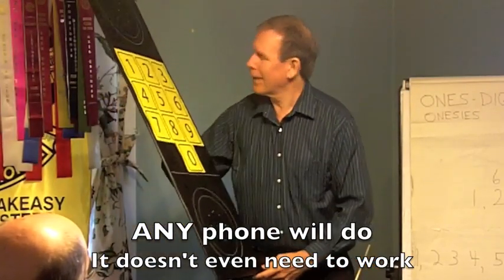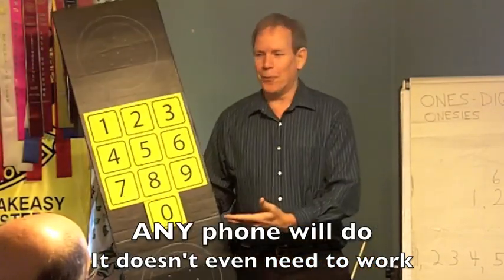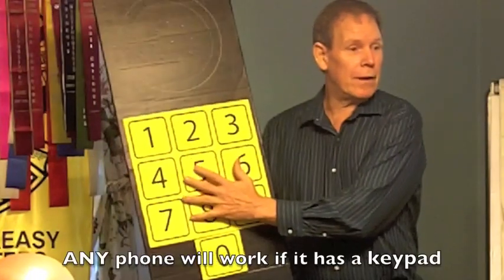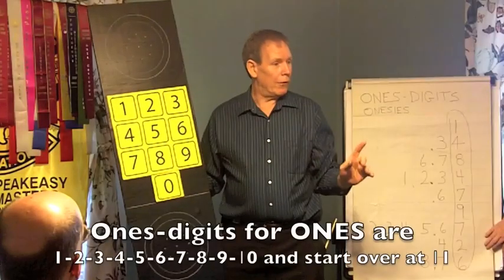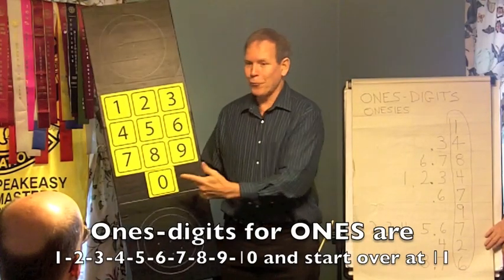Here's a phone. Now, hello! There's not even a dial tone. It doesn't work. All we actually need is the keypad. To really look at the ones digits, do the ones. To count by ones, the phone is real easy.